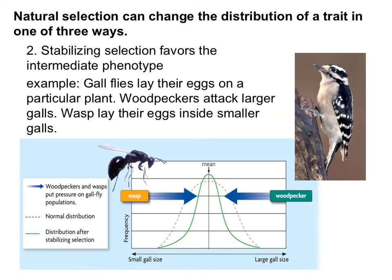The second type of selection is called stabilizing selection, and it favors the intermediate or middle phenotype. An example is gall flies that lay their eggs on a particular plant. The large ones get attacked by woodpeckers, so their population decreases. The small ones, wasps can actually lay their eggs inside of them, and they will die as well. So the extreme phenotypes start decreasing, and you get more with the intermediate phenotype — that is stabilizing selection.